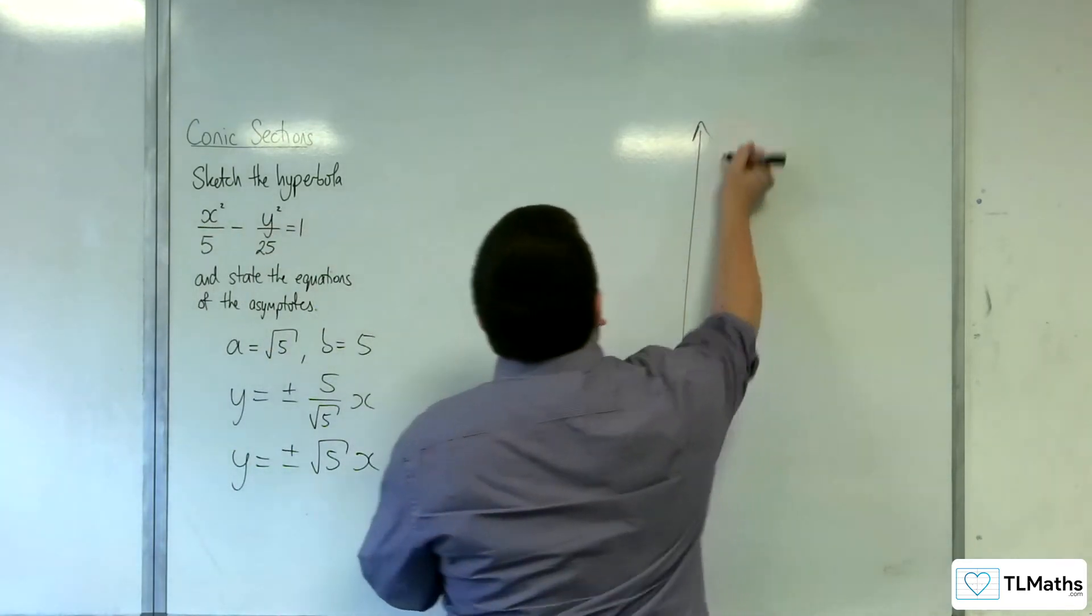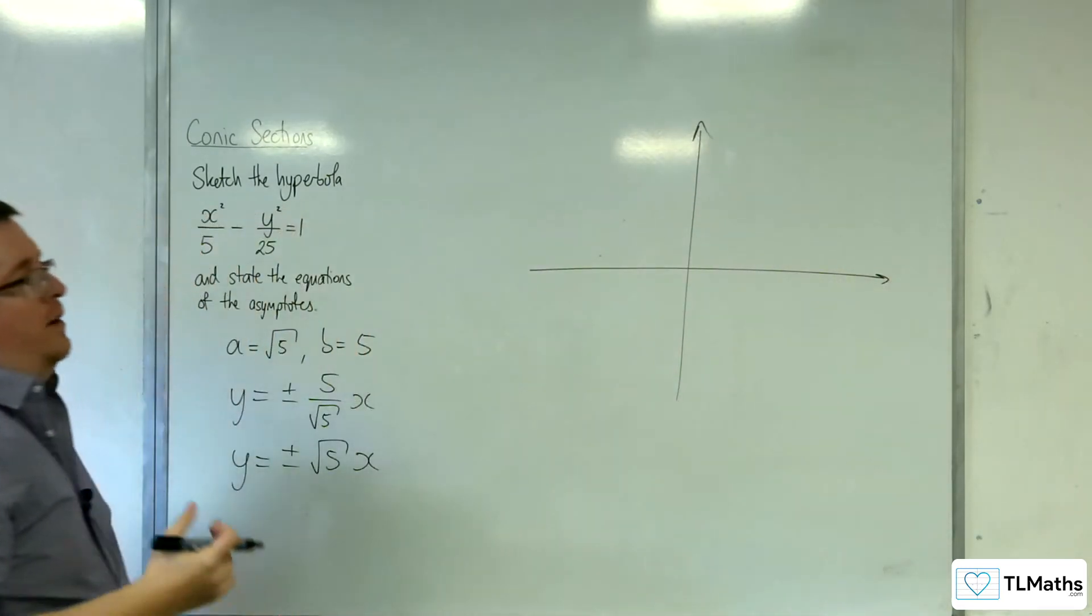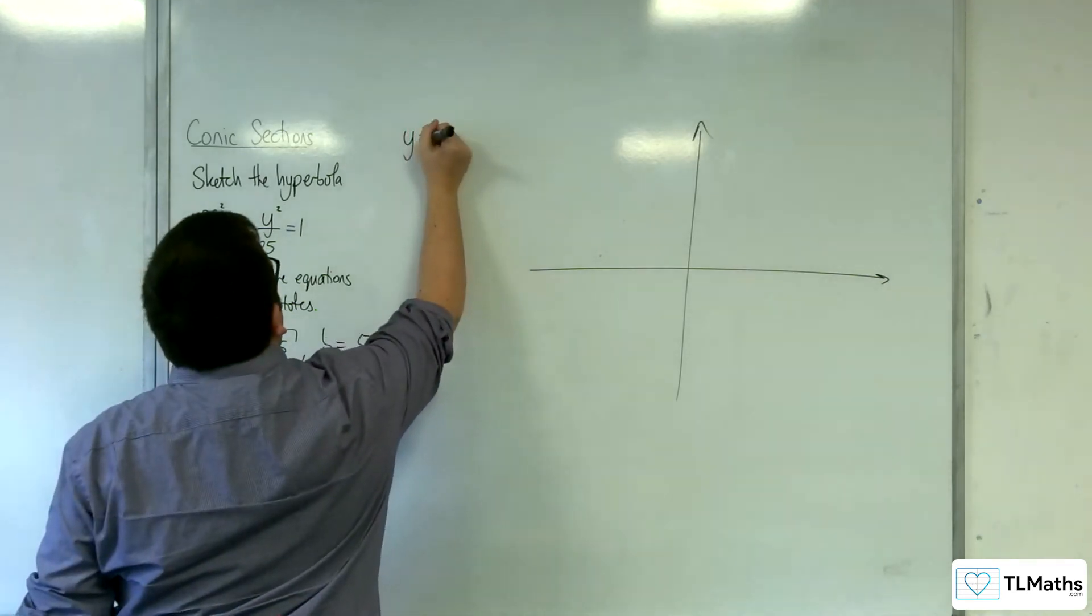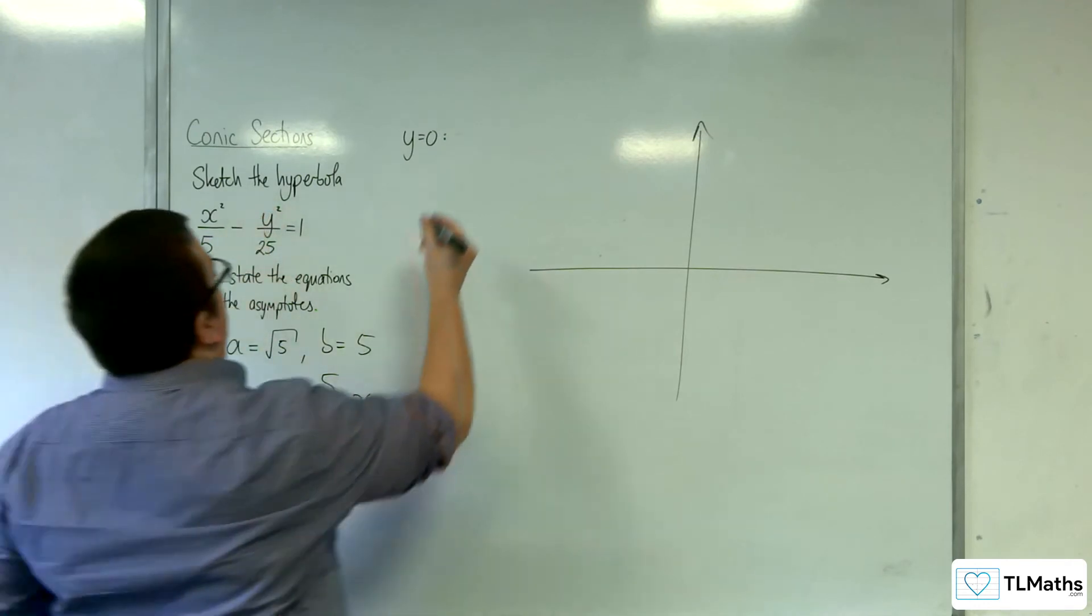So let's get to the sketch. Where is it going to be crossing the x-axis? That's when y is 0. So when y is 0, we've got x² must equal 5.